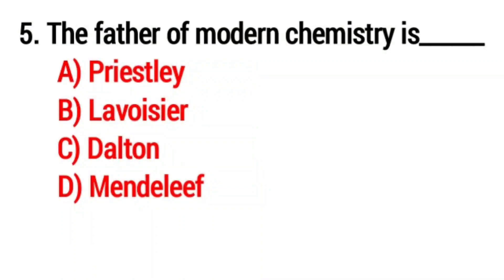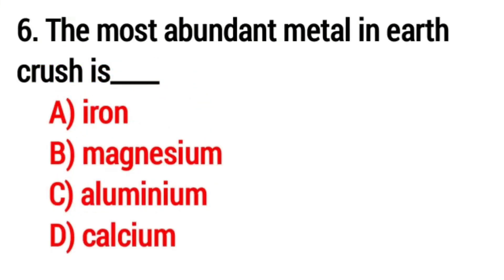Question number five: The father of modern chemistry is? Answer: option B, Lavoisier. Question number six: The most abundant metal in earth's crust is? Answer: option C, aluminum.